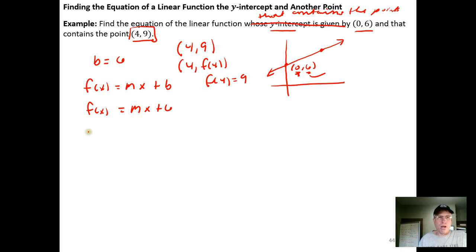Which means, to find m, all I need to do is replace f(x) with the 9, the output, because f(x) represents the function output. So when the function output is 9, the function input is 4. So I replaced x, which is the input with 4, plus the 6.